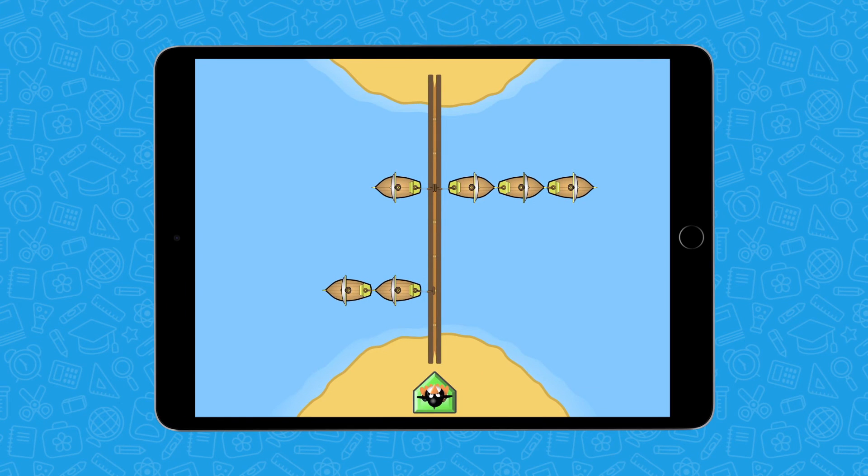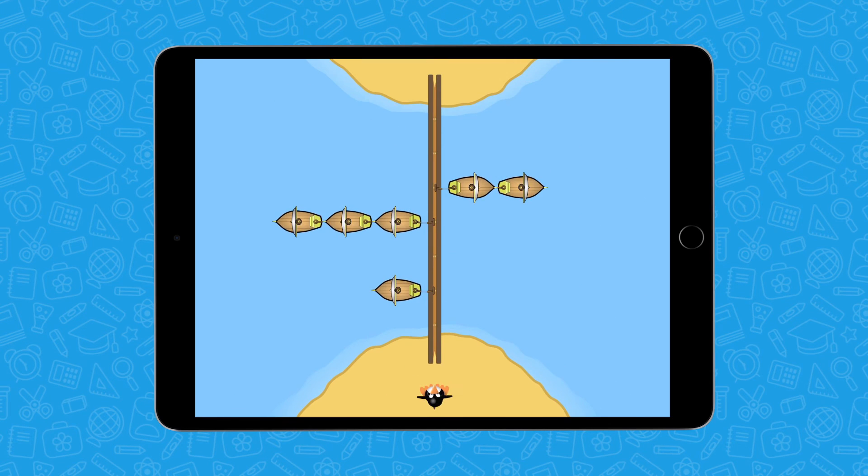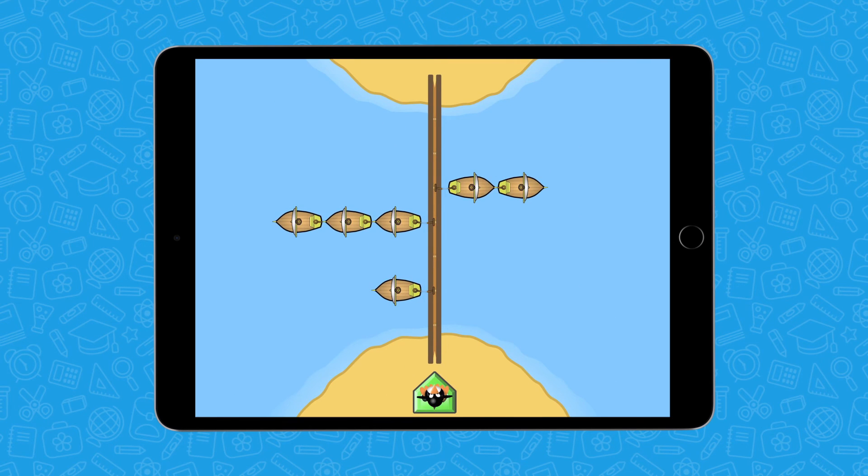Here's a puzzle called Tugboat, where students must determine how to balance the number of boats on each side of a bridge. Notice there are no written instructions. Students must explore the puzzle to determine how to solve the problem.